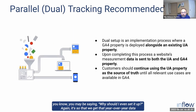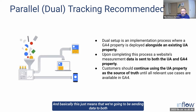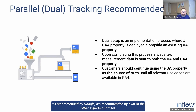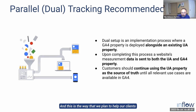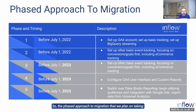You may be asking why you should set it up now — the answer is to get that year-over-year data. We're not going to be actively reporting out of GA4 yet. In the meantime, what we recommend is parallel tracking, or dual tracking. This means we'll be sending data to both Universal Analytics and Google Analytics 4 at the same time. It's a totally standard implementation, recommended by Google and by many experts, and this is how we plan to help our clients transition to GA4.